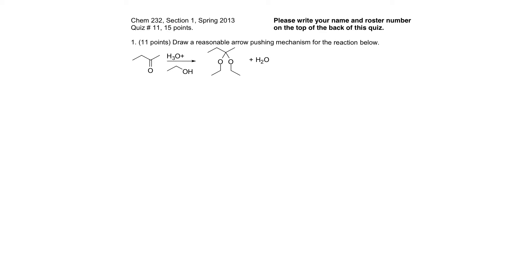Here's the key for quiz 11. The first question says draw a reasonable arrow pushing mechanism for this reaction. I would like to point out that in recent years I've started to ask students to fill in the product as well, so you should be able to predict the product and draw the mechanism of similar reactions.